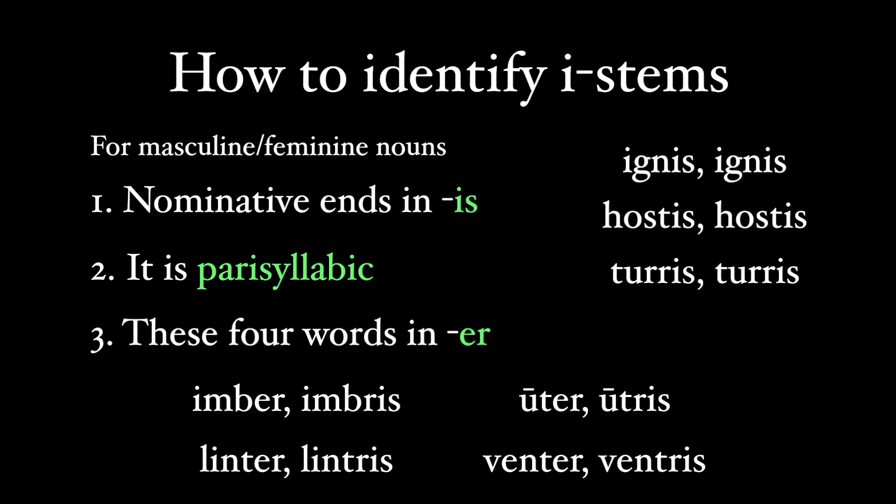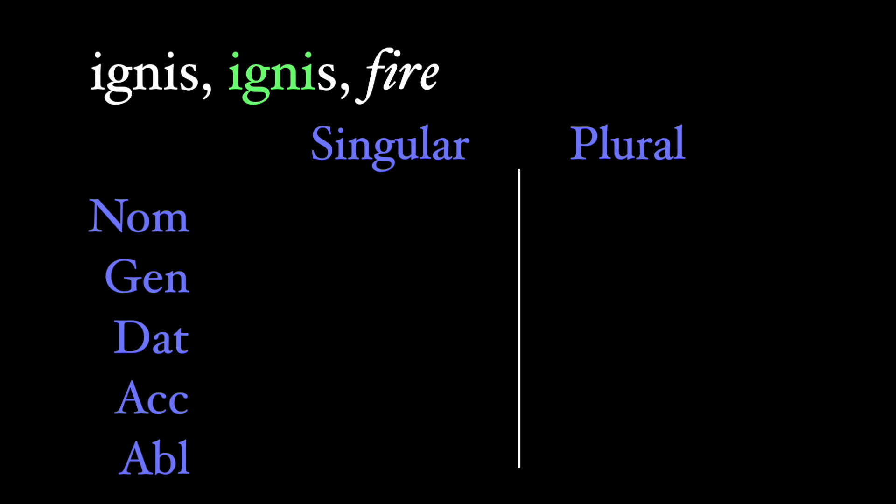So this group, the stem ends in a short I. Let's take ignis. The stem is igni, and we form the nominative by adding an is to the stem, and so that's how we get the is ending in the nominative singular. The genitive likewise forms it with the s ending. The dative works by lengthening this I.